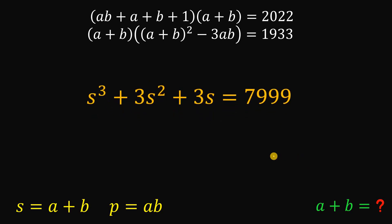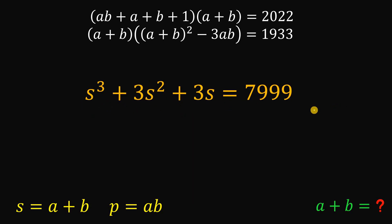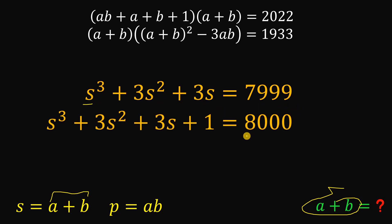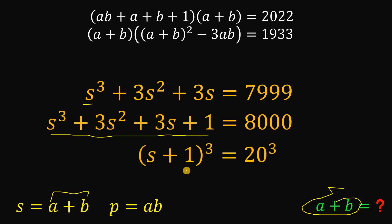This resulting equation contains only the variable s, which equals a+b — exactly what we want. To solve it, we add 1 to both sides: 7999 + 1 = 8000. The four terms s³ + 3s² + 3s + 1 factor nicely as (s+1)³, because the coefficients 1, 3, 3, 1 are a row of Pascal's triangle.